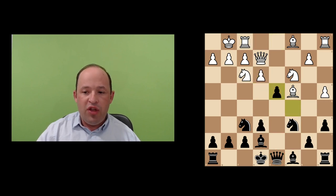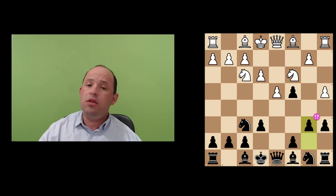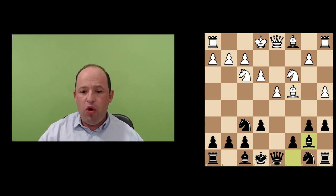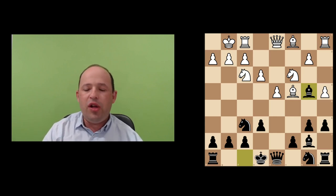We have a very complex middlegame, somewhat resembling maybe the main line of the Slav, the Classical Slav. So we have this position—I think in both cases Black is doing pretty well.